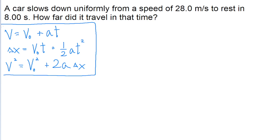So I've written out those three equations in this little box, and remember that the method we use is that we want to pick the equation that has the variable we're trying to solve for and the variables that we have. So the variable we're being asked to solve for is how far the car traveled. So that's delta x. Delta x is our unknown that we're looking for.